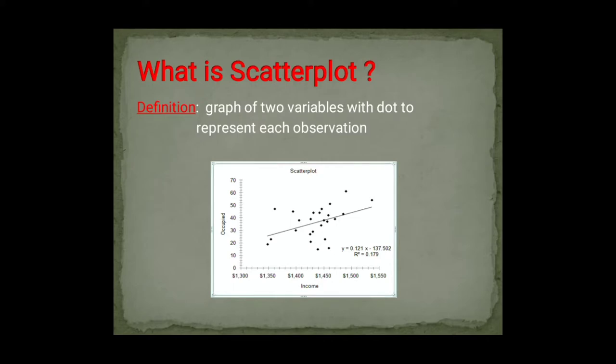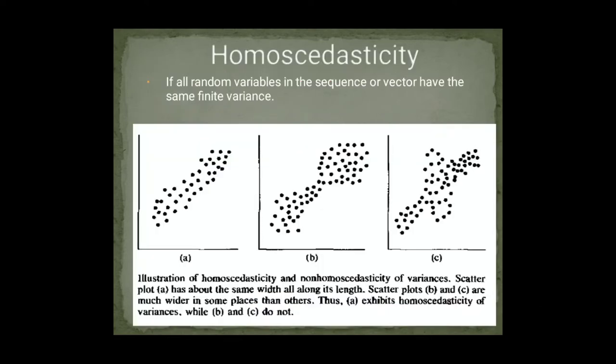There is a graph called scatter plot. Scatter plot is a graph of two variables with a dot to represent each observation. We have two variables — for example income and occupation — and I will put plots as dots between these two variables. So what we call this is a scatter plot. Now homoscedasticity — homoscedasticity shows that when all random variables will have the same variance.